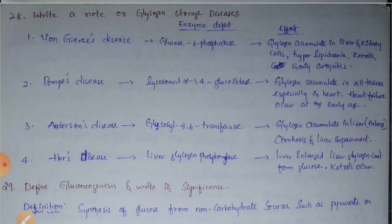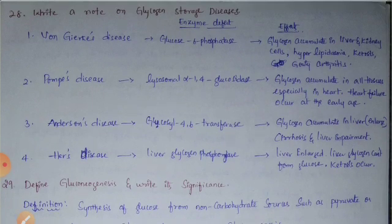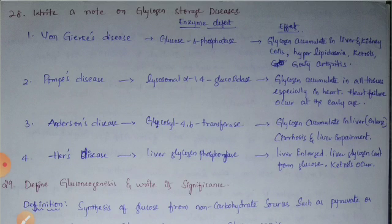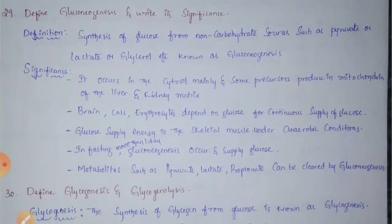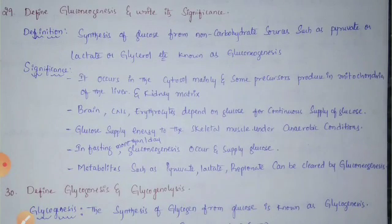In Anderson's disease, the liver enlarges and cirrhosis and liver impairment occur. Fourth is Hers' disease, due to liver glycogen phosphorylase deficiency, causing liver enlargement. Liver glycogen cannot form glucose and ketosis occurs.